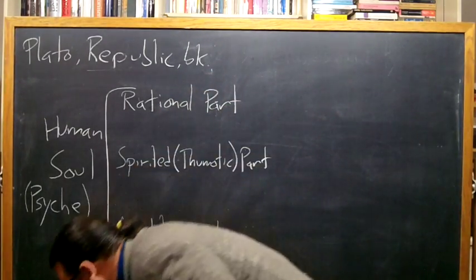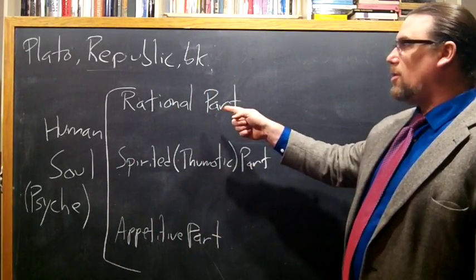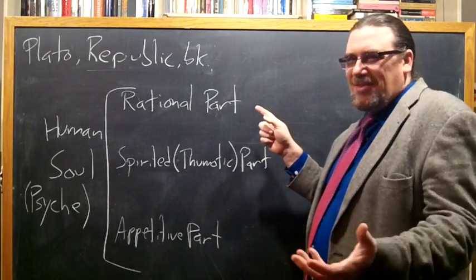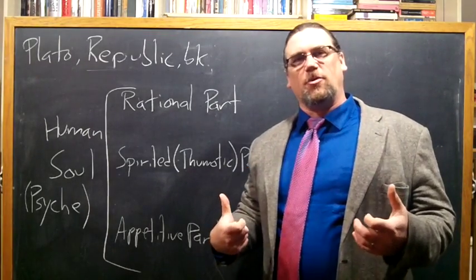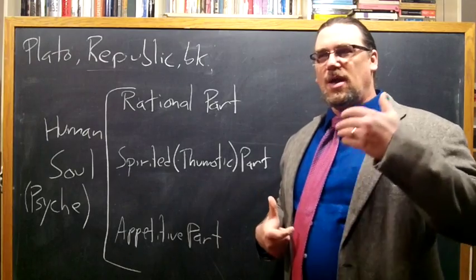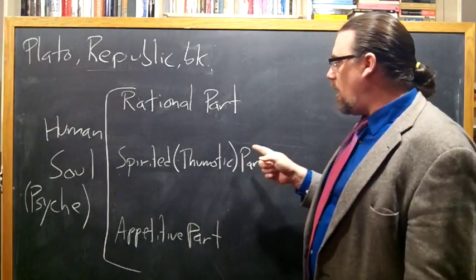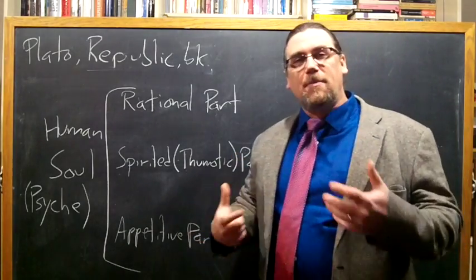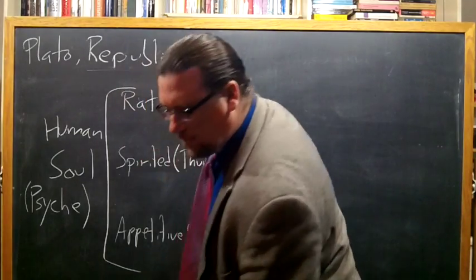Now, he's going to call these three parts the rational part of the soul. And this is a very small part. Just like in the city, the rulers are a pretty small part. And then the spirited or thumatic, it's coming from this Greek word thumos, which can mean anger. It also means sort of a desire for competition and glory. The part of us that gets riled up, he says. And then the appetitive part, the desirous part that desires certain kinds of things.